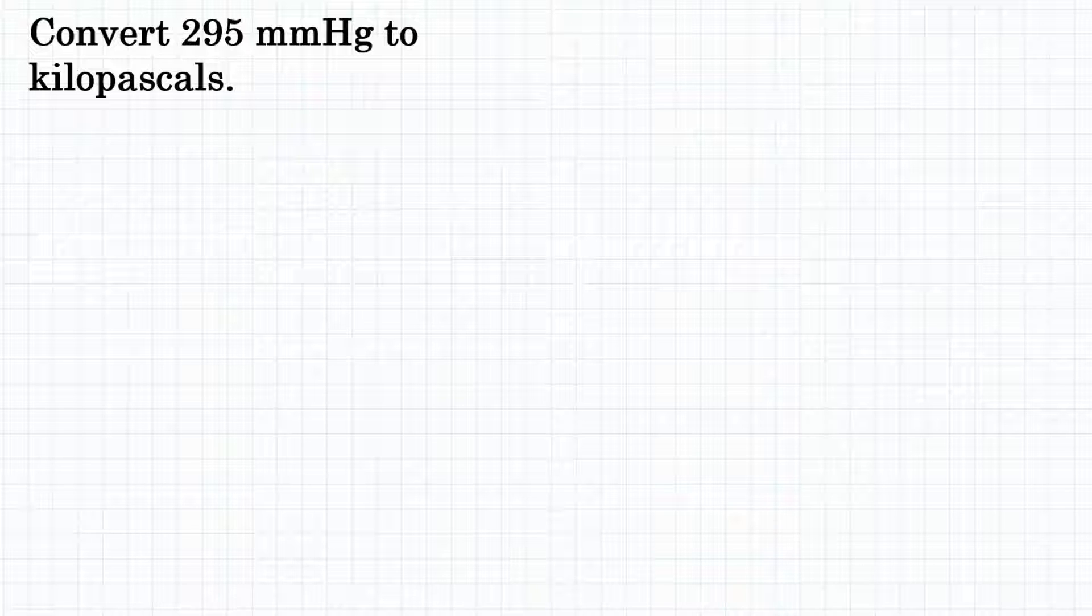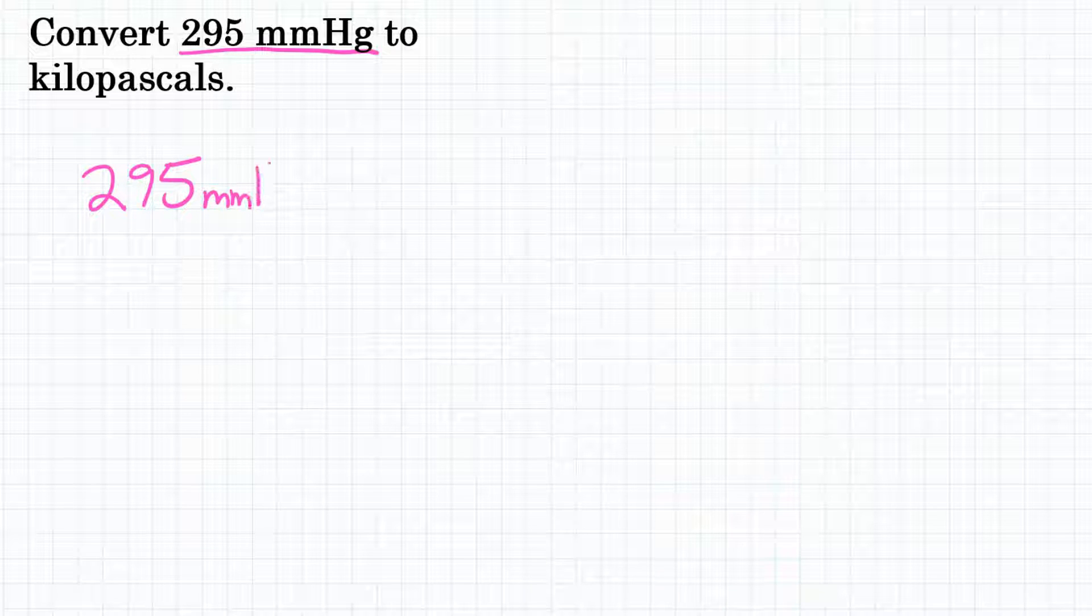This is a simple one-step pressure unit conversion problem where we are starting with 295 millimeters of mercury.